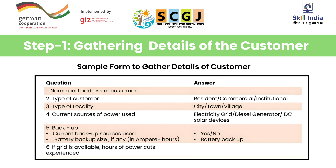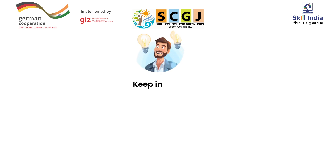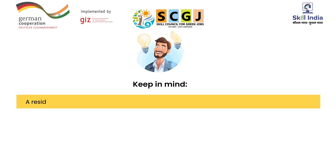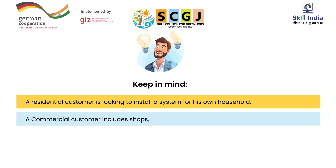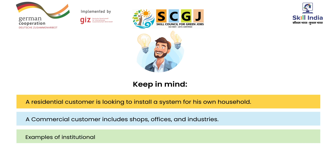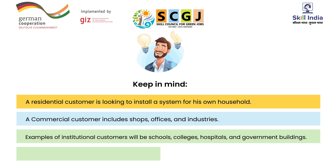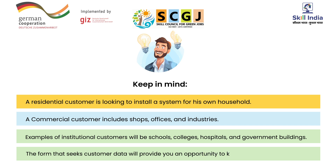Study this form for your reference at your convenience. You can ask for more information from the customers. A residential customer is looking to install a system for his own household. A commercial customer includes shops, offices, and industries. Examples of institutional customers will be schools, colleges, hospitals, and government buildings. The form that seeks customer data will provide you an opportunity to know your customer better.